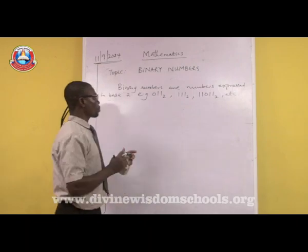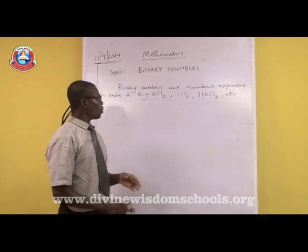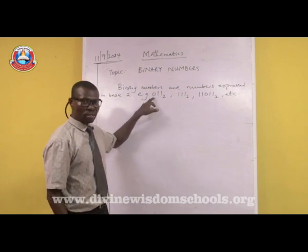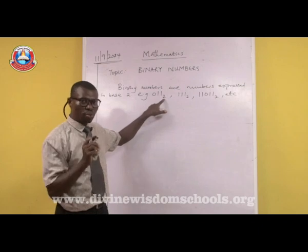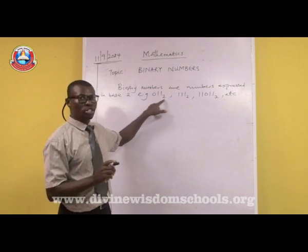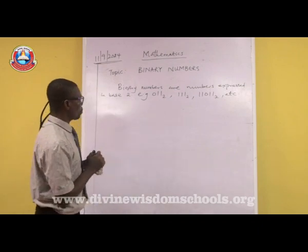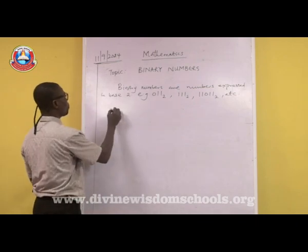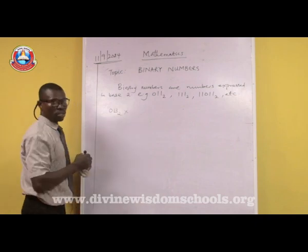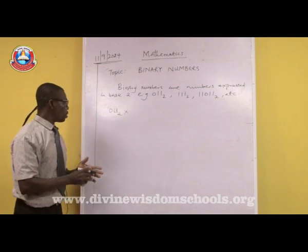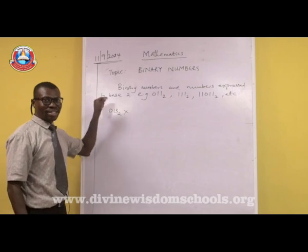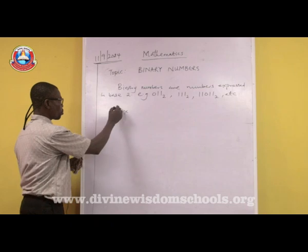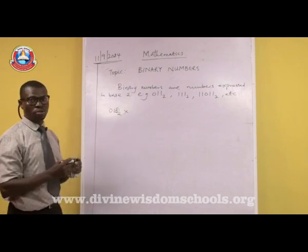Looking at these examples on the board, you have the digits 0 and 1 — none of these digits must be equal to or greater than the base 2. For instance, if you write 013 base 2, that is wrong. The reason is because one of the digits, 3, is already greater than the base, which is 2.